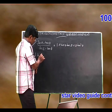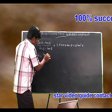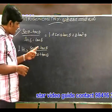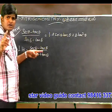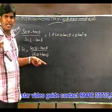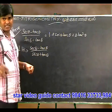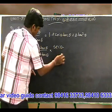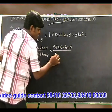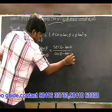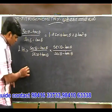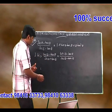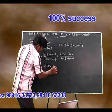LHS — left hand side — is secant theta minus tan theta divided by secant theta plus tan theta. We multiply numerator and denominator by the numerator value. The numerator value is equivalent to secant theta minus tan theta. So this becomes secant theta minus tan theta, the whole square.